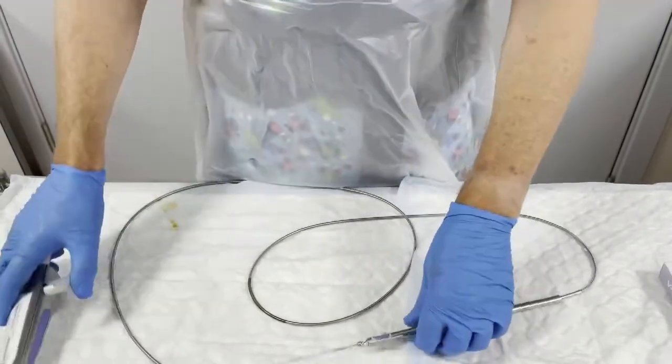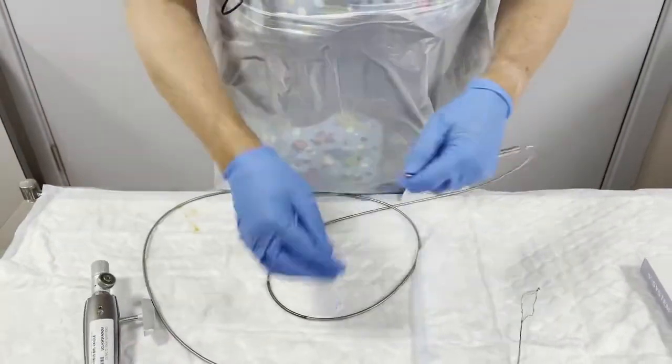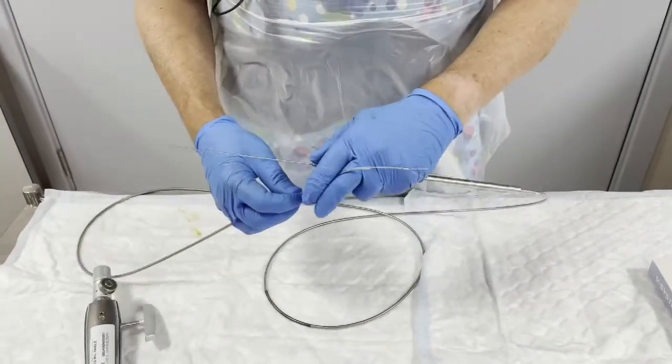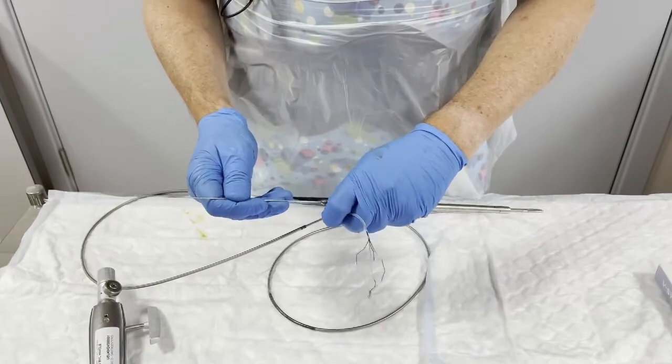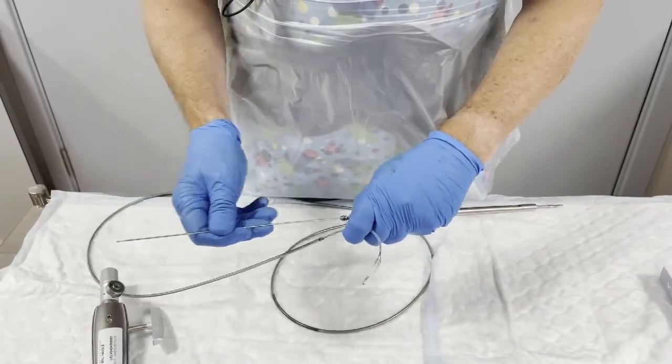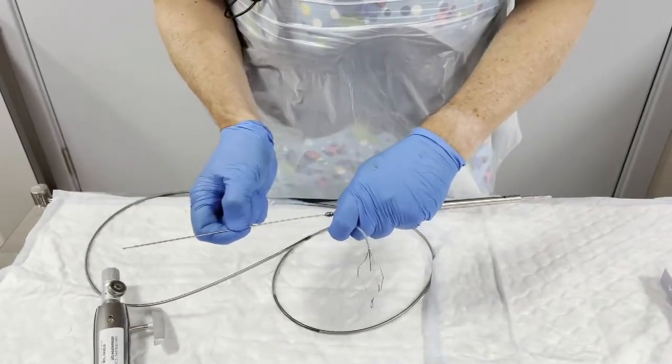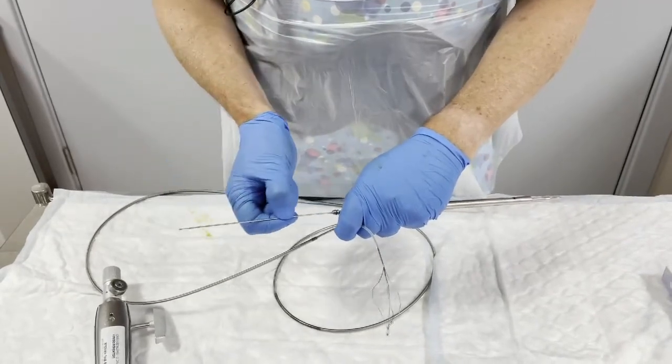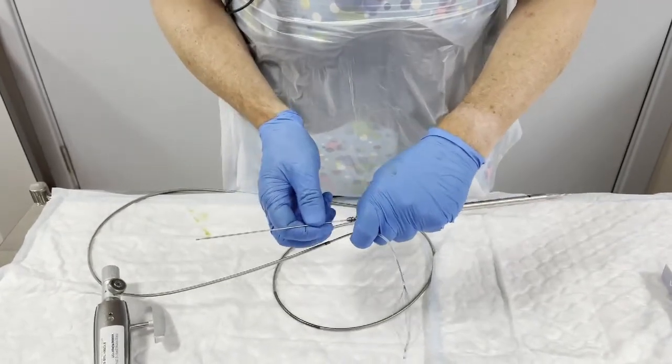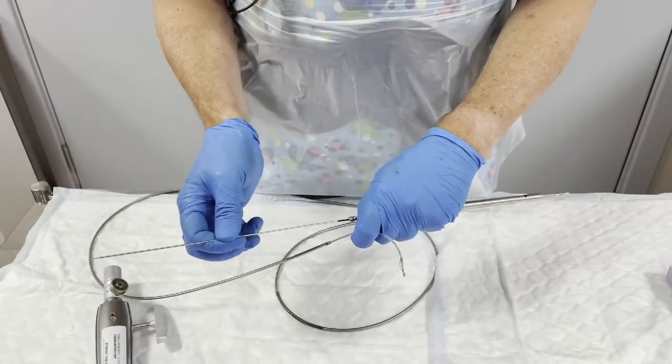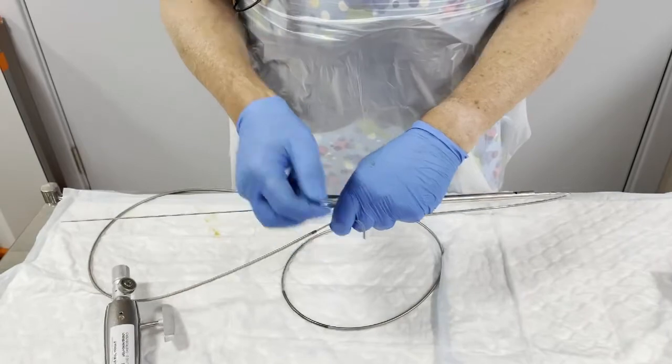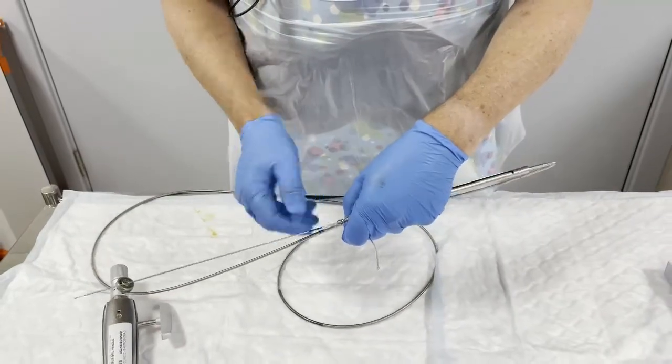You can see here on the lithotriptor itself that the basket opens and closes by the metal internal sheath moving backwards and forwards. The first thing you want to do is to pull this back maximally so that the metal hub is against the plastic catheter, and you can see the black marker here.